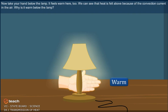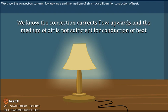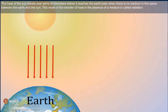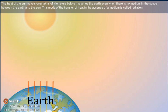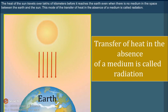We can see that heat is felt above because of the convection current in the air. Why is it warm below the lamp? We know the convection currents flow upwards and the medium of air is not sufficient for conduction of heat. The heat of the sun travels over lakhs of kilometers before it reaches the earth, even when there is no medium in the space between the earth and the sun. This mode of transfer of heat in the absence of a medium is called radiation.